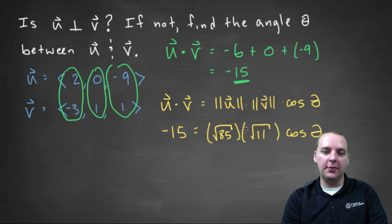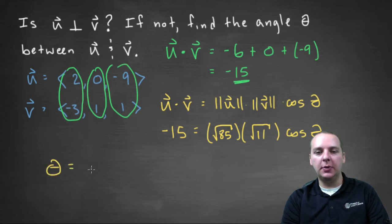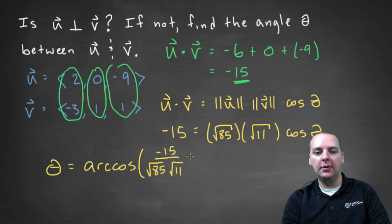And then divide those two radical terms away from the cosine, and then take the arc cosine of both sides. So I am skipping a little bit of algebra here, but the theta would be arc cosine of negative fifteen divided by root eighty-five times root eleven.